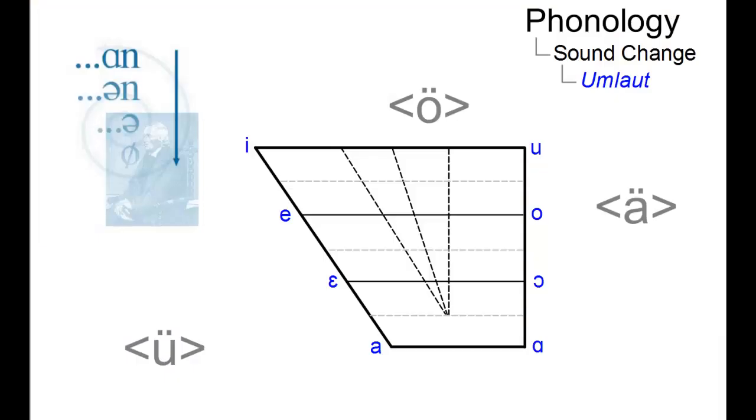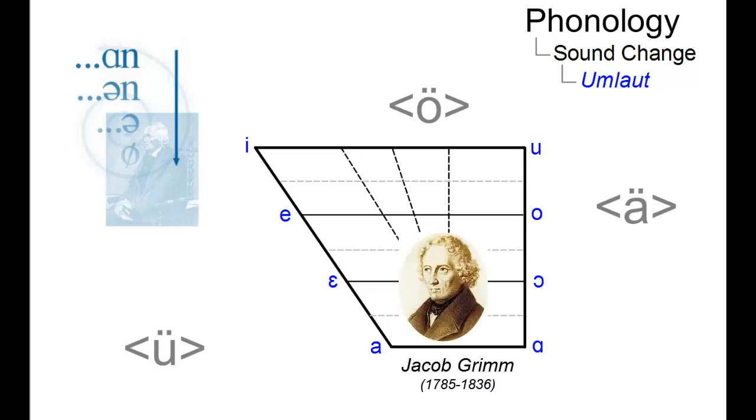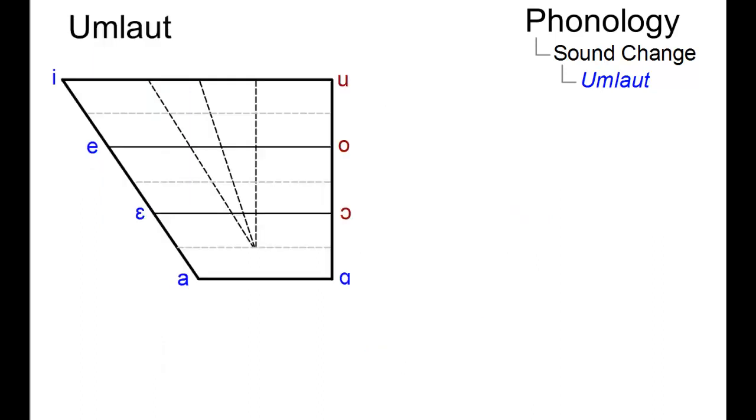The term umlaut, which goes back to Jacob Grimm, is used in two ways. On the one hand, it denotes a special kind of vocalic change in many Germanic languages, whereby a vowel is pronounced more like a following vowel.